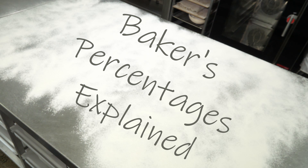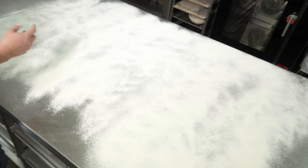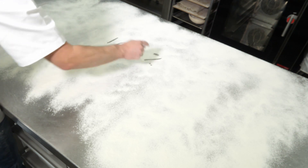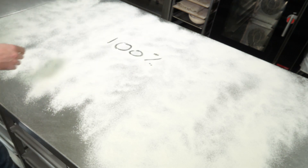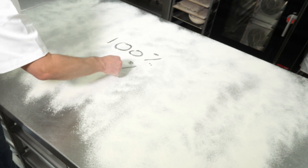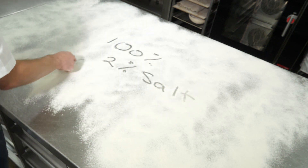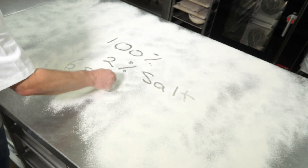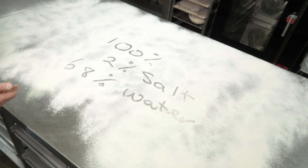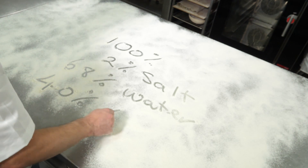In bread making, we work with formulas, not recipes. A formula is always based off 100% flour. So if we have 100% flour, we then have a percentage of whatever else we start with. Most recipes will have 2% salt, it might have 68% water, and depending on your recipe, you might have 40 to 50% levain.